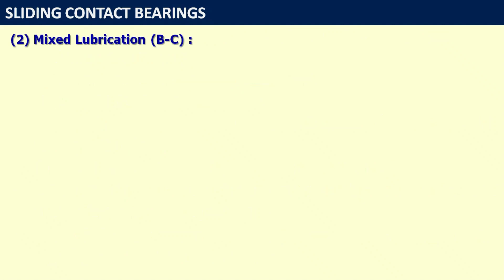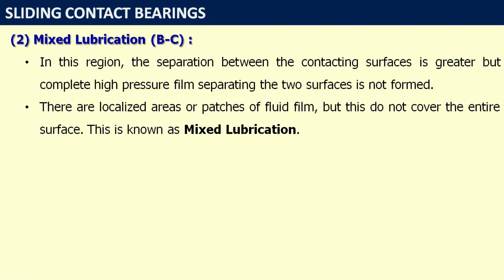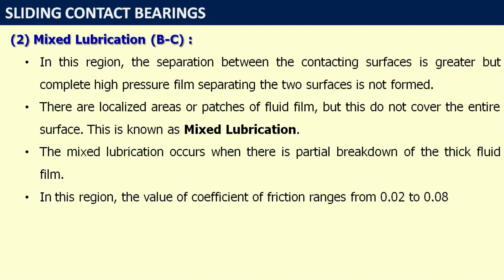The second region is mixed lubrication, indicated by part BC. In this region, the separation between contact surfaces is greater but a complete high-pressure film separating both surfaces is not formed. There are localized patches of fluid film that do not cover the entire surface. This is known as mixed lubrication — some regions have lubricant and separation, while others still have direct metal-to-metal contact. Mixed lubrication occurs when there is a partial breakdown of the thick fluid film. The coefficient of friction in this region ranges from 0.02 to 0.08.